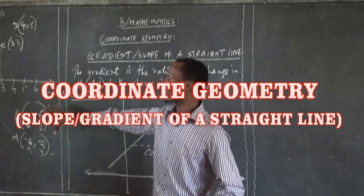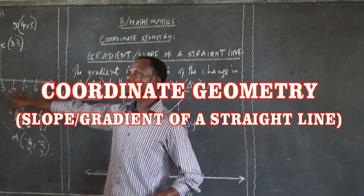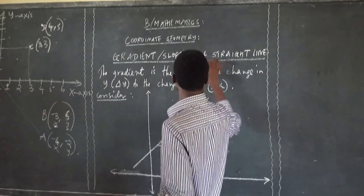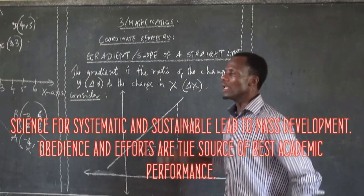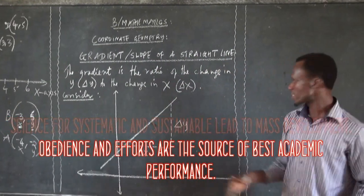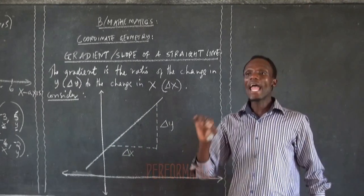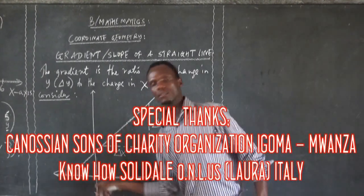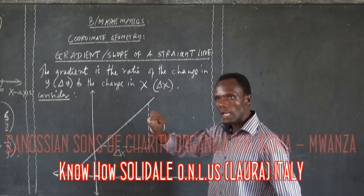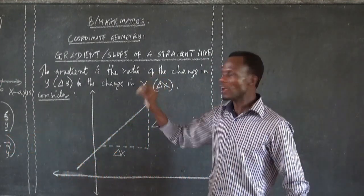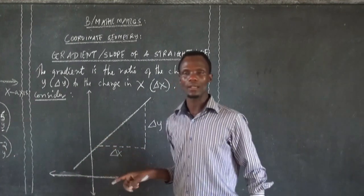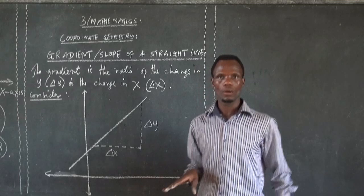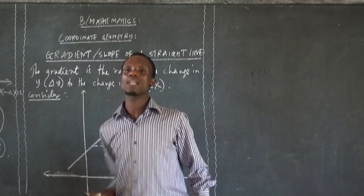After we have discussed how to locate the points, we need to understand something called the gradient or slope of a straight line. If you have several points and you join those points, you will form a straight line. Every straight line must have a slope. So how do we determine the slope of a straight line?